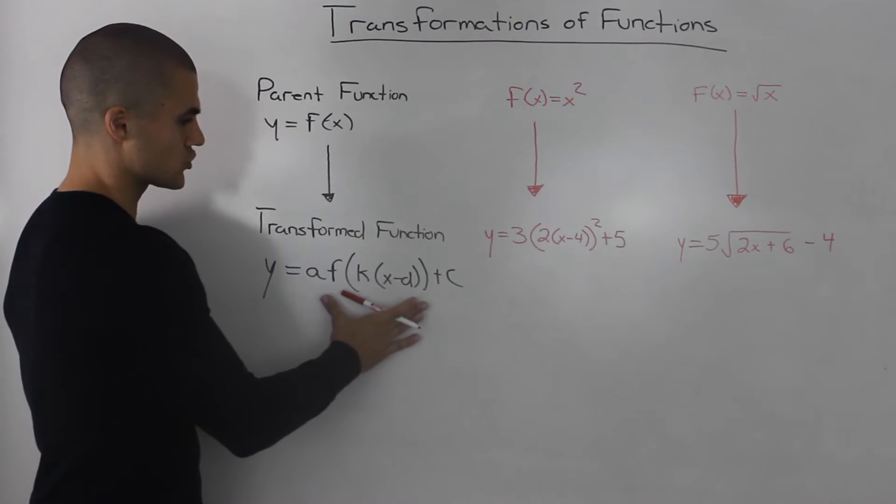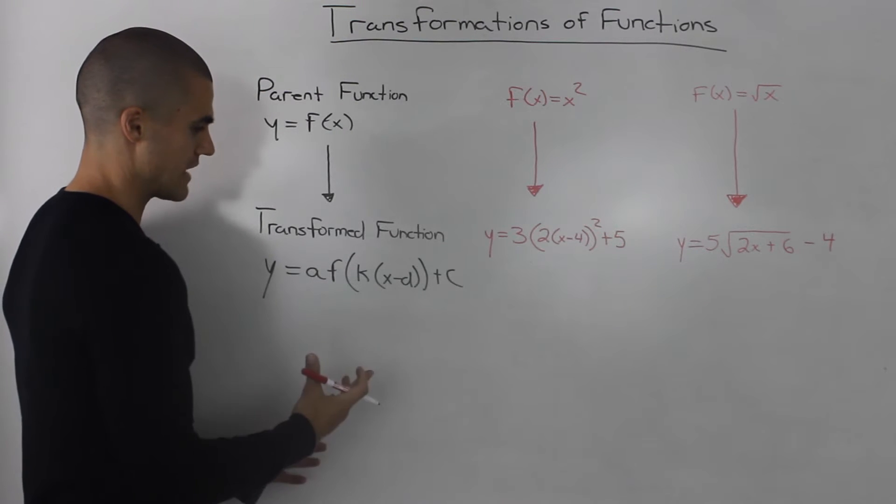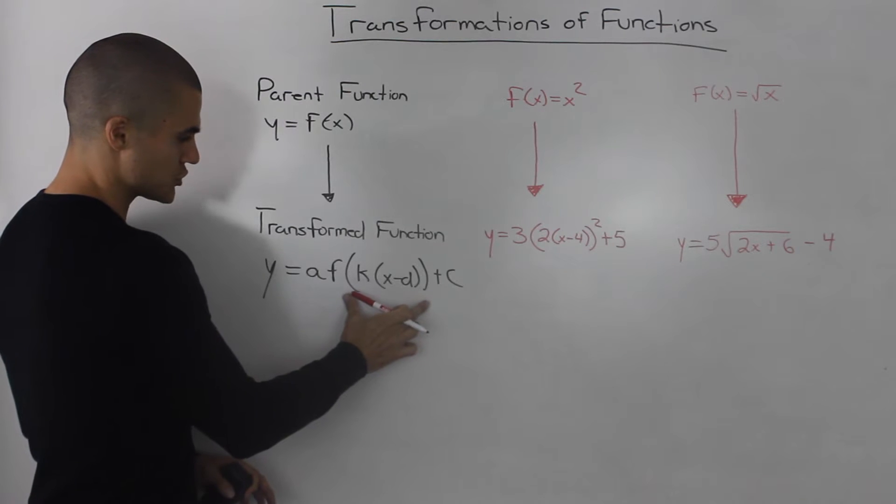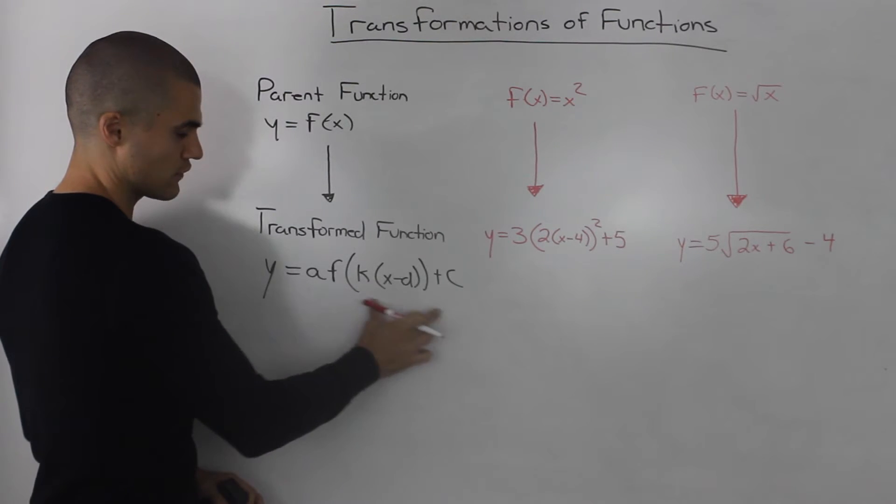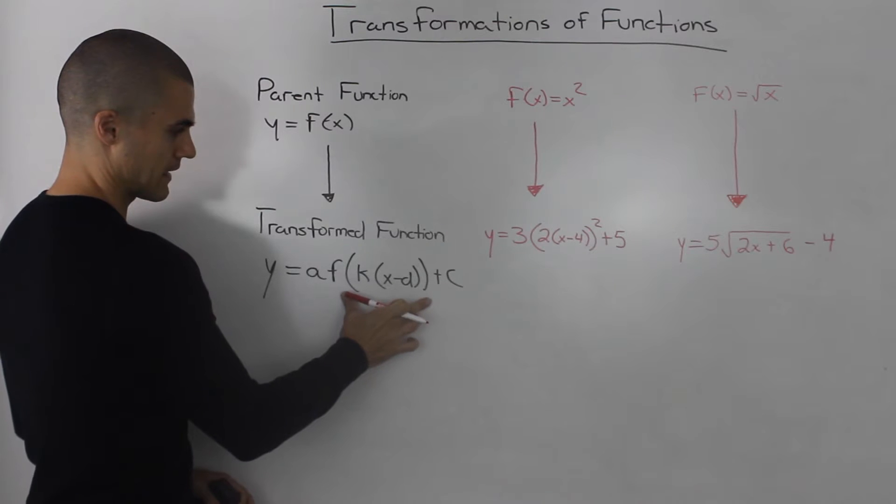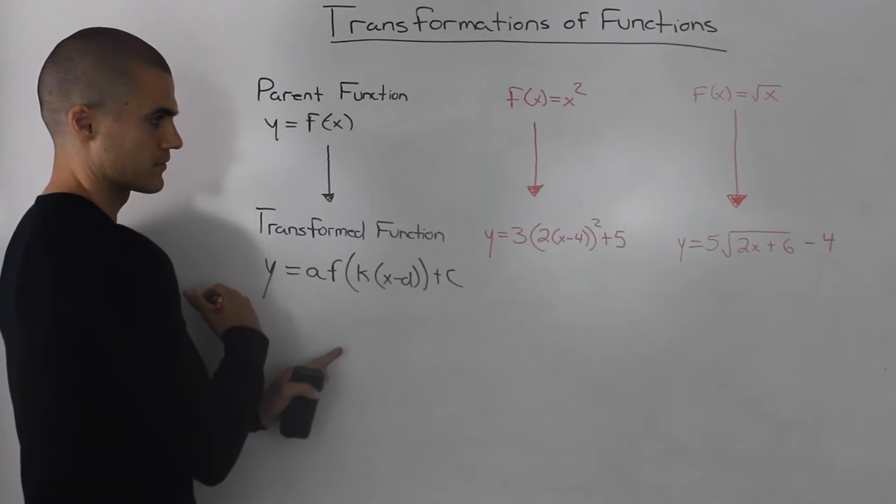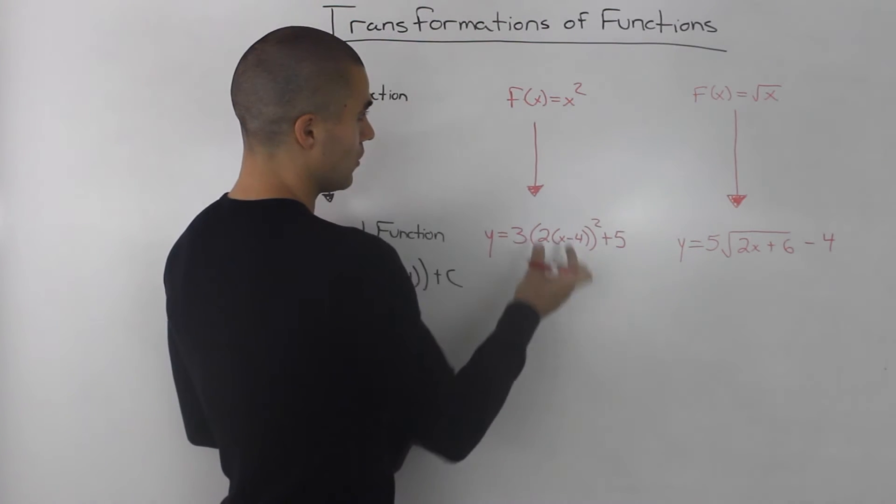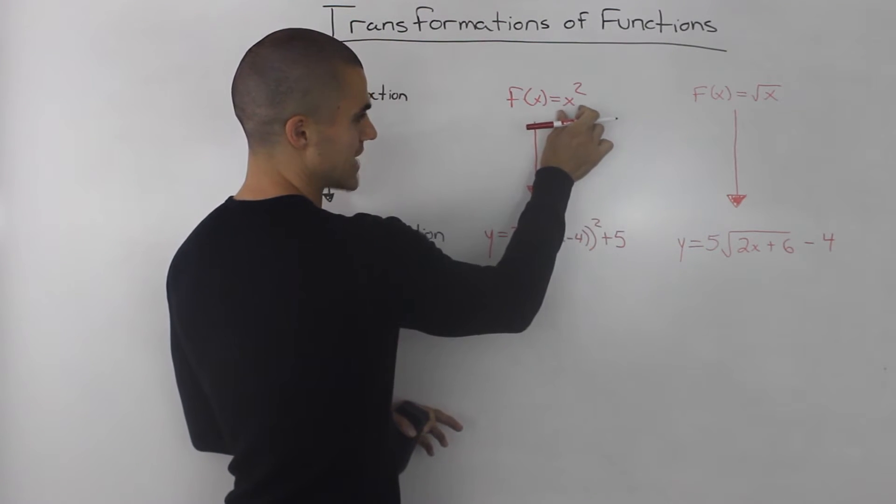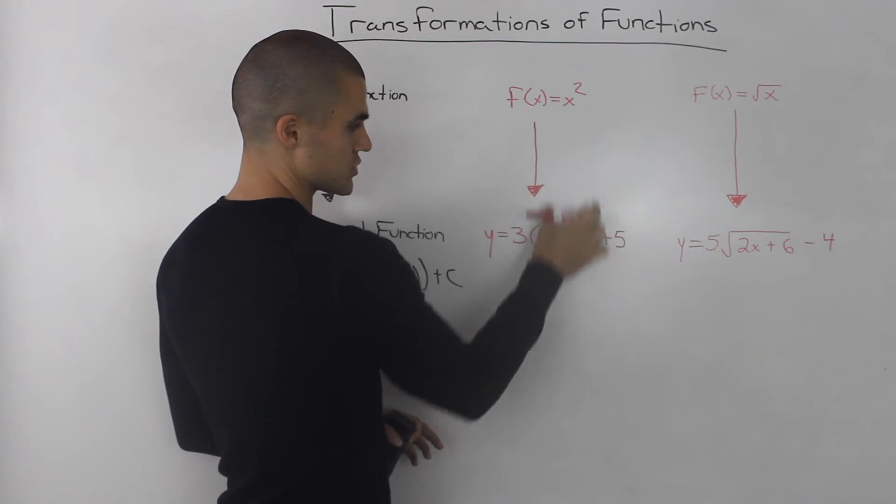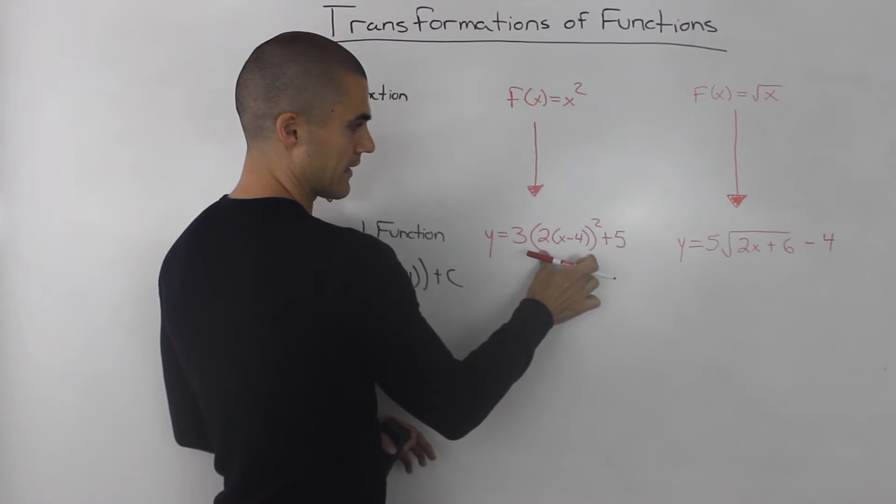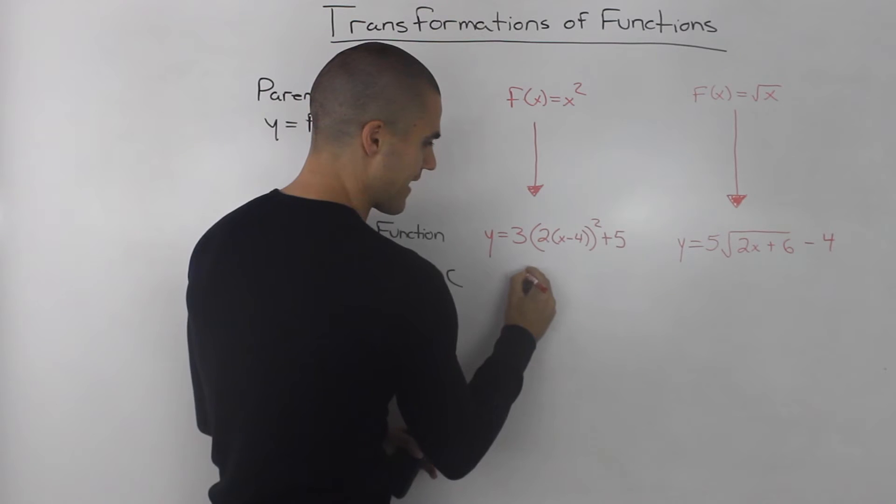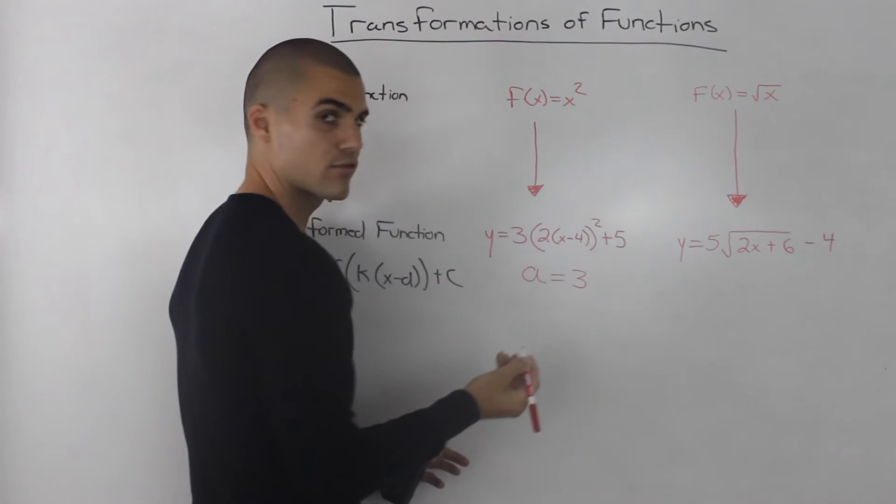Now if you look at the general transform function again, and specifically look at this a value, notice how the a value is always attached to the function, whatever the function would be, this f here, however, it's sort of outside of it. So if we go back to our specific examples, notice how the parent function is x² and it corresponds to this whole bracket squared. And outside of that function is this 3 and it's attached to it. So the a value in this case is 3.